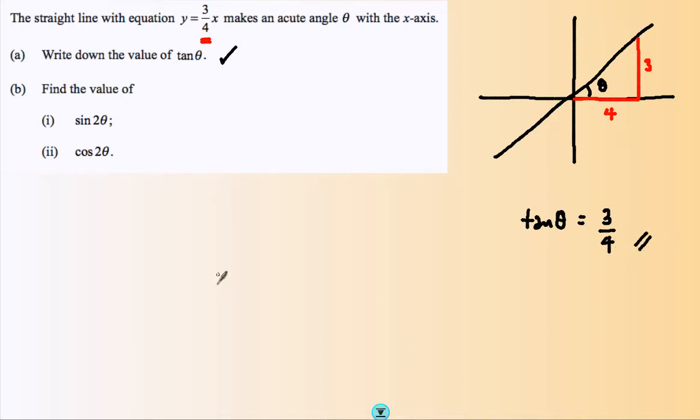Part B. Part B is about sine 2 theta, cos 2 theta. These are double angles.